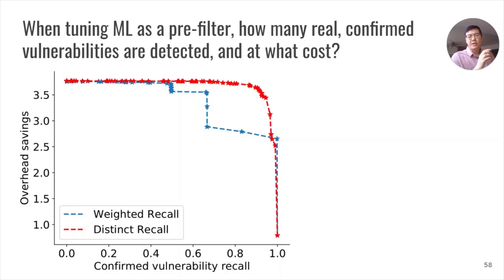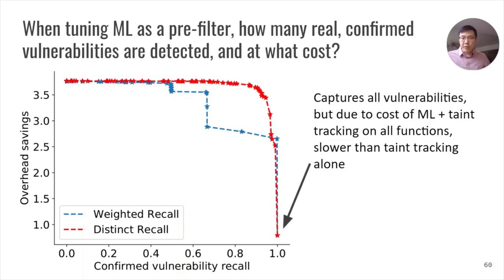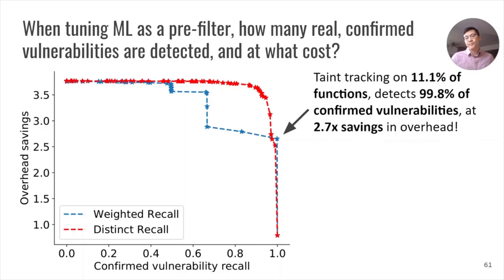Next, we see how the ultimate confirmed vulnerability recall translates to the hypothetical savings in our system. In this graph, we show the end-to-end confirmed vulnerability recall and the proposed hypothetical overhead savings based on a series of local performance tests. It's possible to achieve high overhead savings by passing very few functions to taint tracking; however, this results in too many false negatives. It's also possible to capture all vulnerabilities by passing all functions to taint tracking, but due to the overhead imposed by machine learning and taint tracking, this solution is slower than taint tracking alone. The key is to find a sweet spot — we identified this point where taint tracking is run on 11.1% of all functions, detects 99.8% of confirmed vulnerabilities, and still produces a 2.7x savings in overhead.